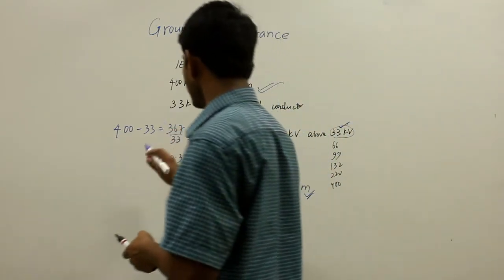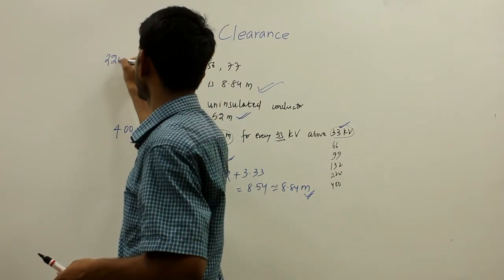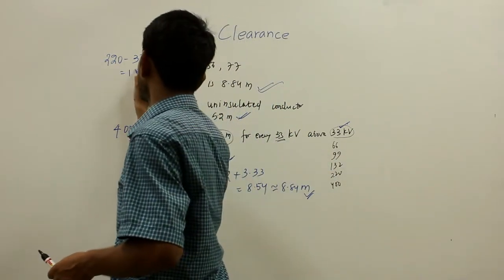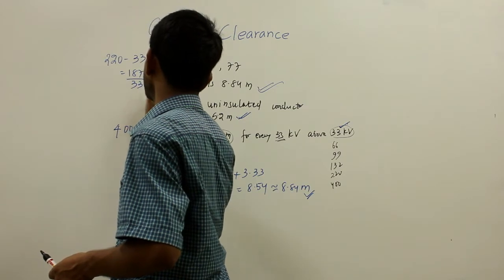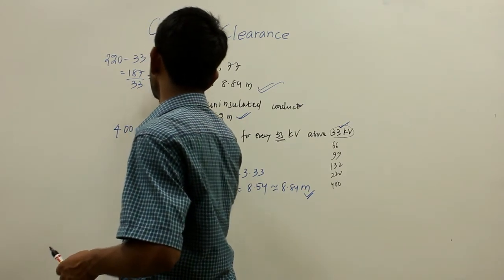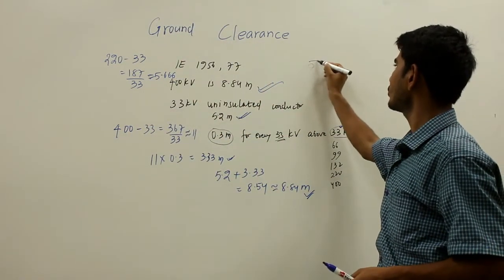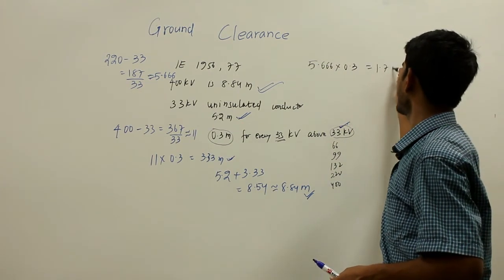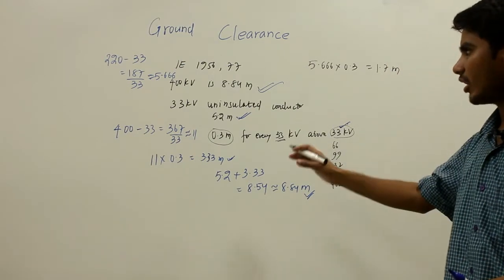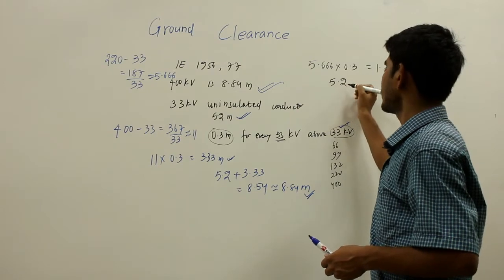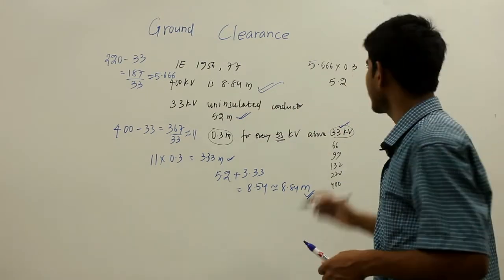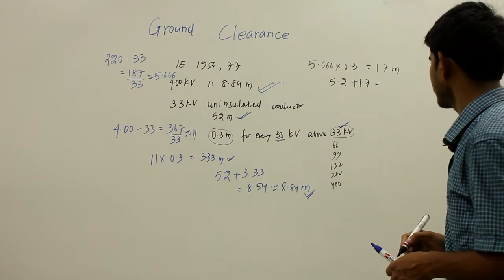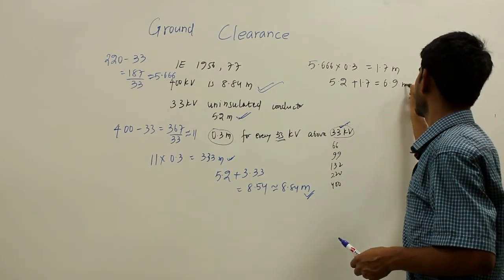Similarly, if we take a 220 kV transmission line: 220 minus 33 equals 187 kV. Dividing 187 by 33 gives approximately 5.66. Multiplying 5.66 by 0.3 gives 1.7 meters. So the minimum ground clearance of a 220 kV bottom conductor is 5.2 plus 1.7, which gives approximately 6.9 meters.